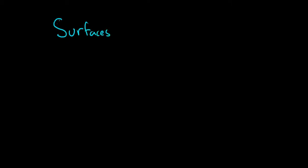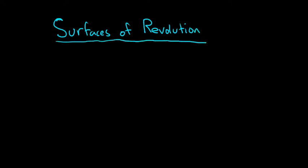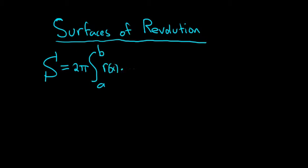Hi everyone. In this video we're going to talk about surfaces of revolution. The formula for surfaces of revolution, I'll use a capital S. It's equal to 2 pi times the definite integral from a to b of little r of x times the square root of 1 plus the derivative of the function squared, with respect to x.